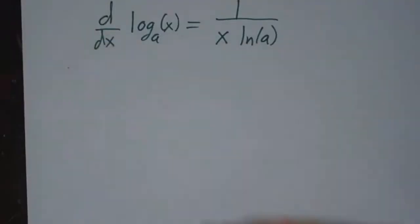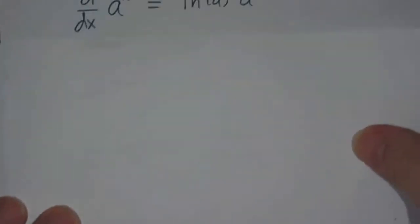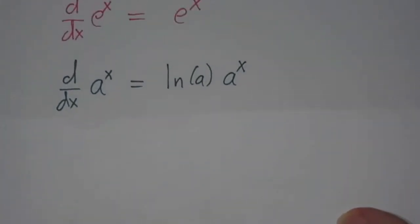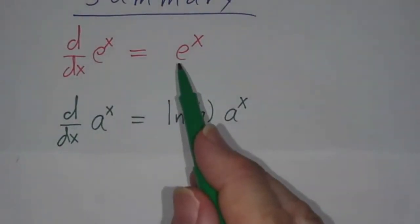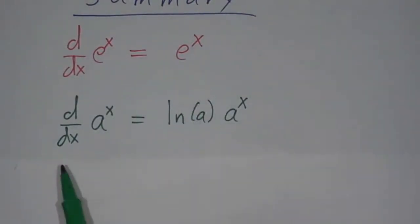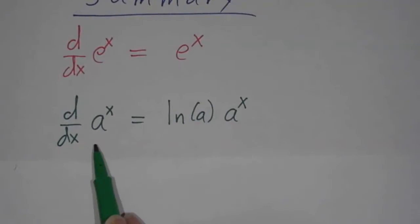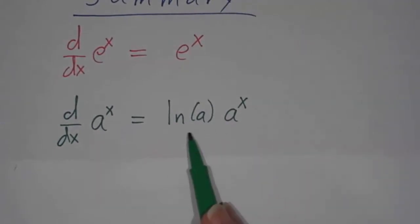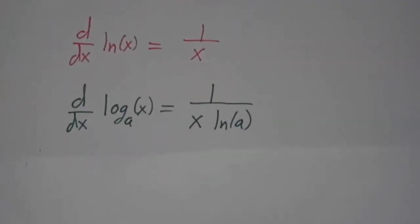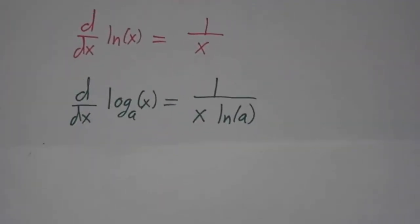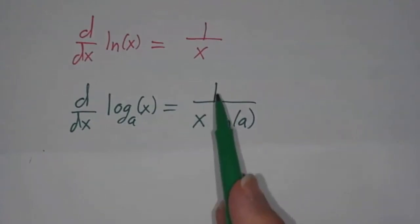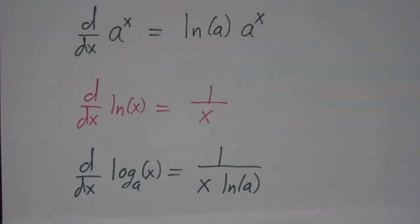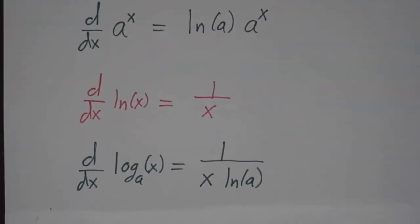And now we're done. We have our derivatives: the derivative of e to the x is e to the x with no extra constant. The derivative of a to the x is a to the x times the natural log of a. The derivative of the natural log of x is 1 over x. The derivative of log base a is 1 over x times log a.